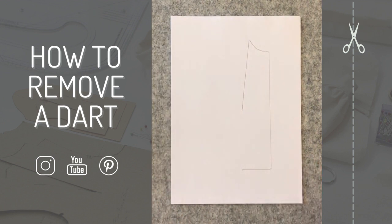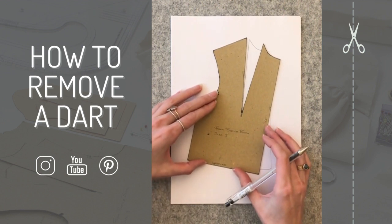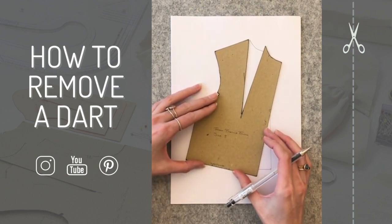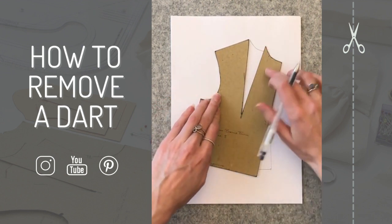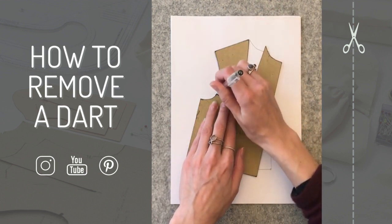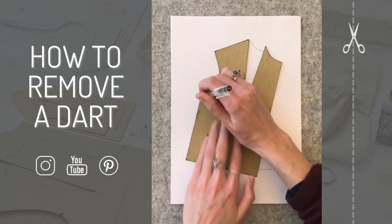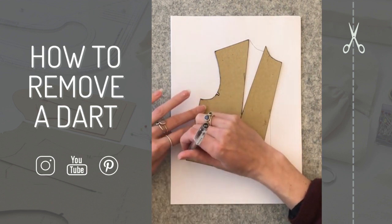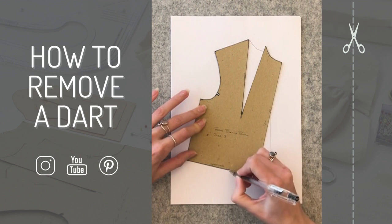I've just drawn that for now, and then I want to close up this dart. All I'm doing is pivoting my block to close up the dart so one edge comes to the other edge. Then I'm putting the dart down into the bottom by drawing around the rest of the block up to the same point as before.